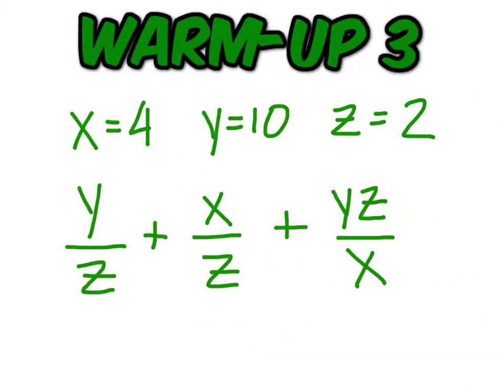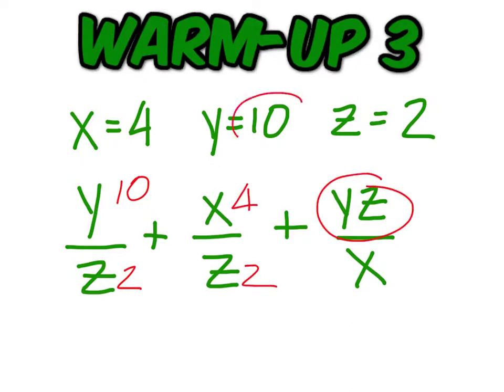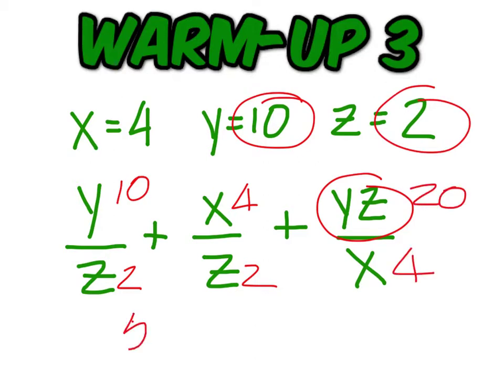Last one. For this one, y is 10, z is 2, x is 4. y times z is 10 times 2, that's 20, over x, which is 4. That would be 5 plus 2 plus 5, which is 12.